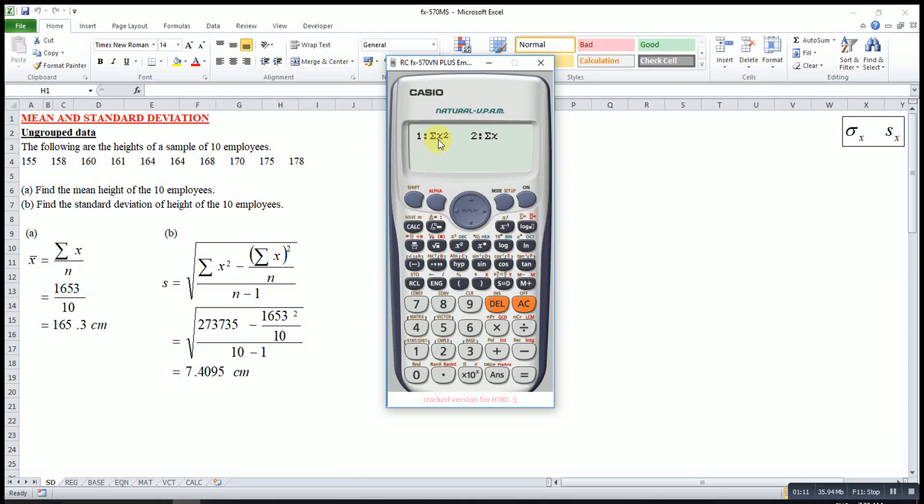Summation x squared is 1, so I choose 1, then equal. So this one will be my summation x squared. If I want summation x, sum, then I choose summation x, 2. And so this one will be my summation x.